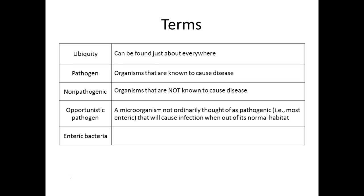Enteric refers to your intestines — this is an informal name for the bacteria that make up our intestinal flora. The unfortunate thing for women is that feces comes out the anus, and very close to that are the vagina and the urethra. If enteric bacteria get from the intestinal environment into one of those two environments, they can cause serious infections. That's the opportunity of being in a different environment.